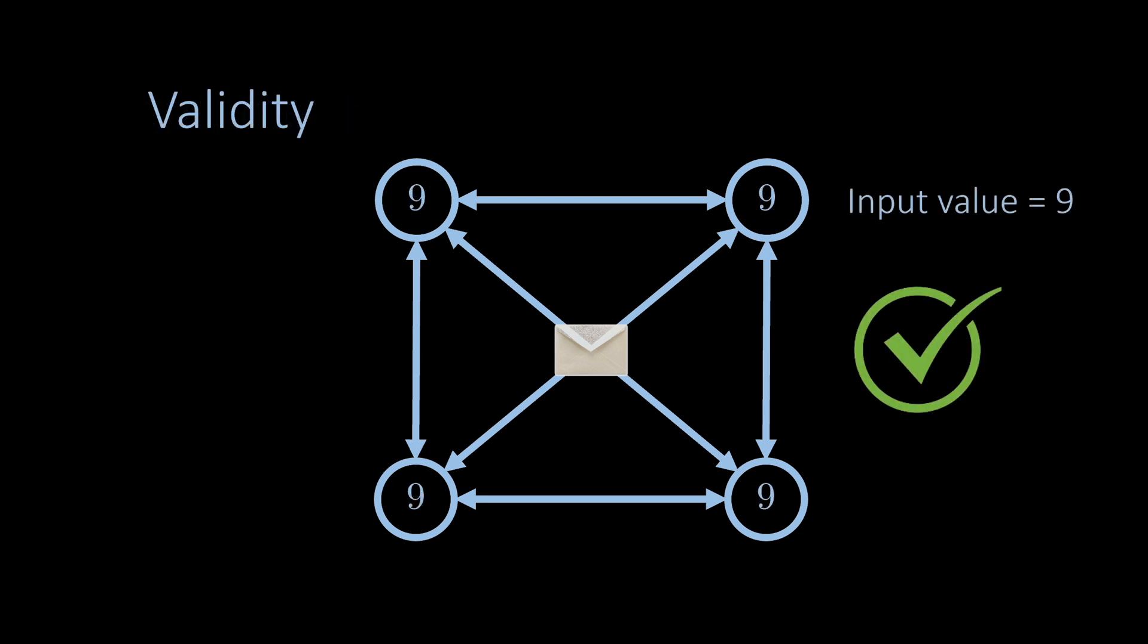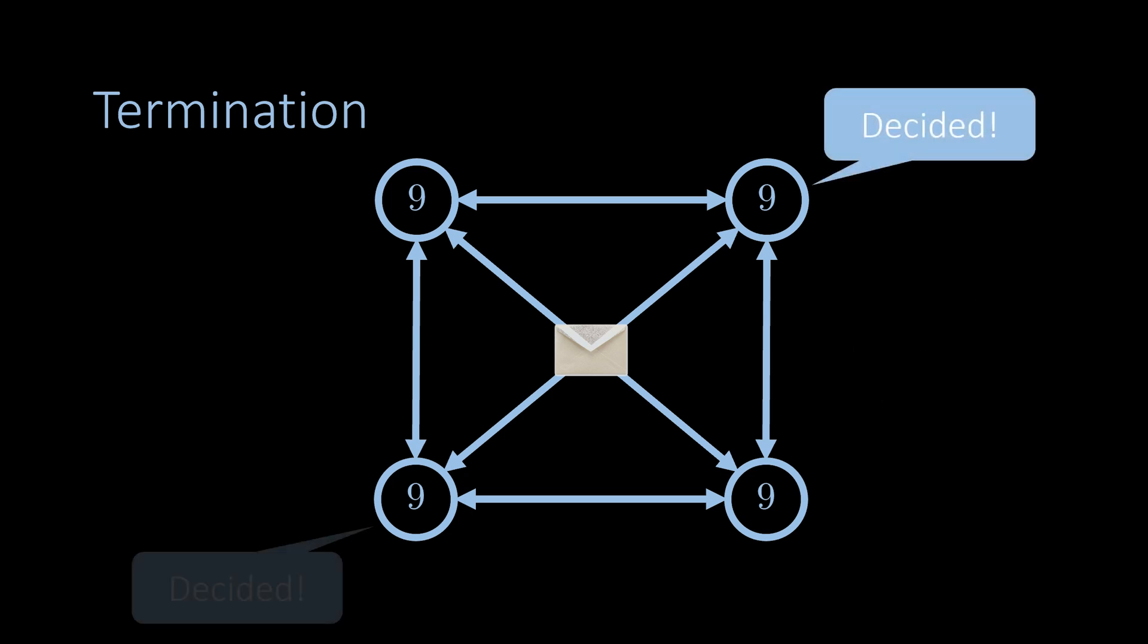The second property is called validity. The algorithm has the validity property if the nodes decide on a value that is the input value of a node, that is, one node must have had this value at the beginning of the execution. Lastly, the third property is called termination, which says that all nodes must eventually decide on a value.